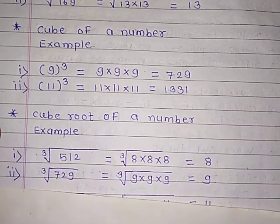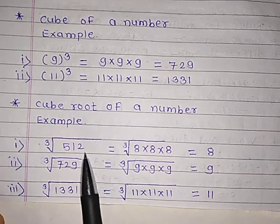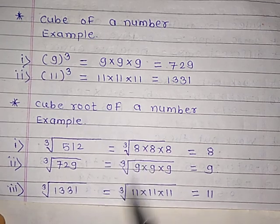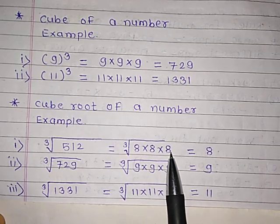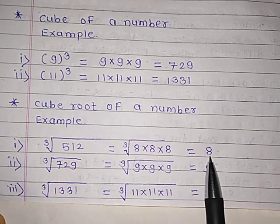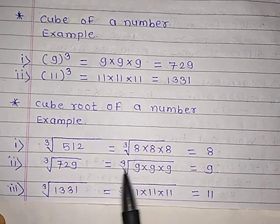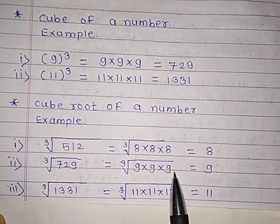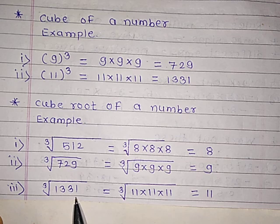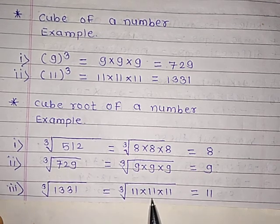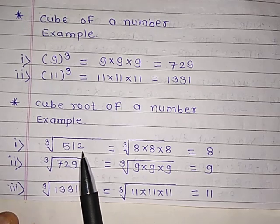Next concept: cube root of a number. The cube root of 512 equals — in the cube root bracket, 8 multiplied by 8 multiplied by 8 — which we can write as 8. Similarly, the cube root of 729 equals 9 multiplied by 9 multiplied by 9, which is 9. And the cube root of 1331 equals 11 multiplied by 11 multiplied by 11, which is equal to 11. So the cube root of 512 is 8.